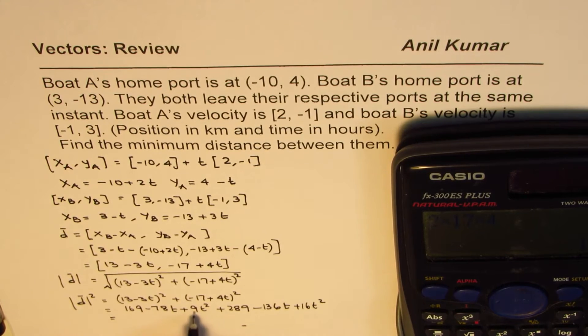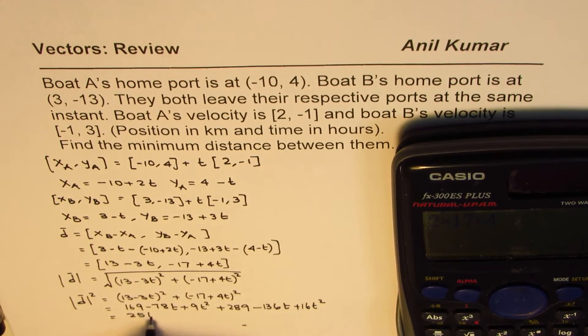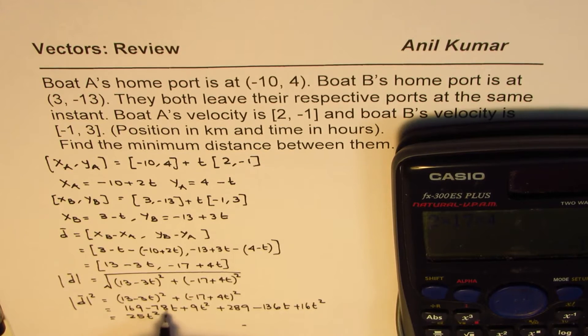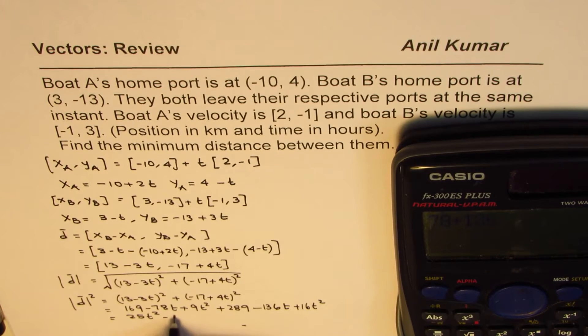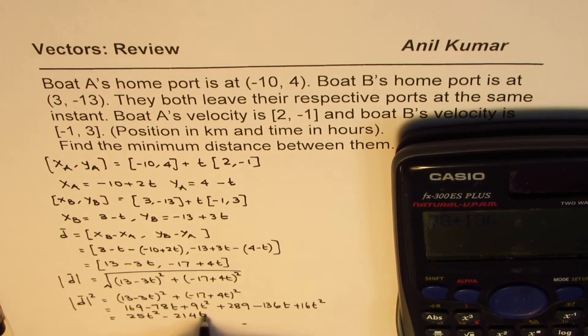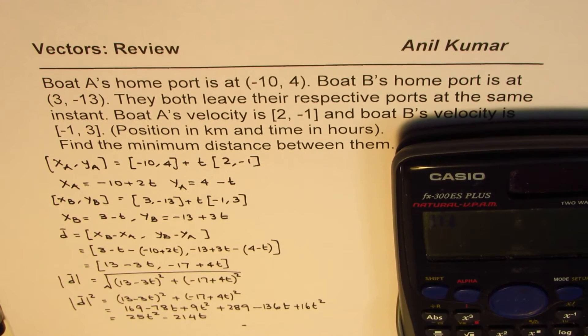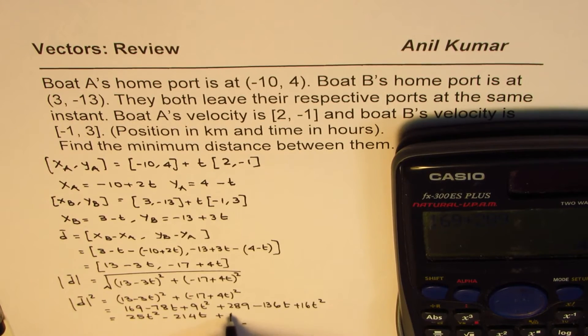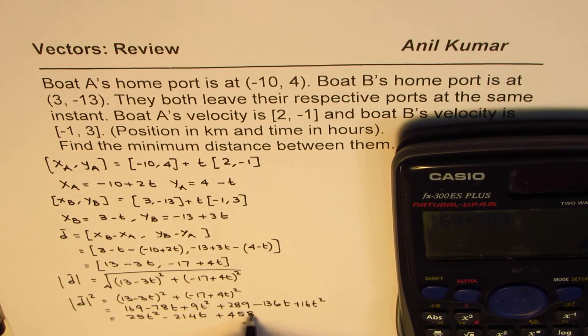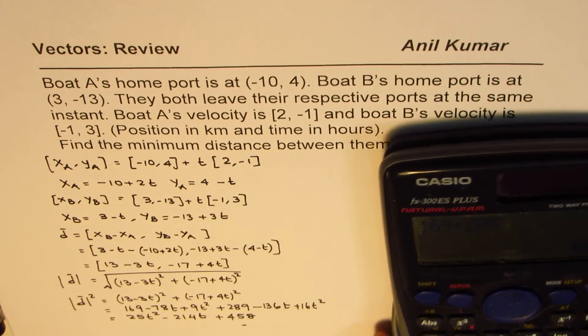Now we can combine these t² terms, which is 25t². 78 and 136, 78 + 136 gives us 214. So we have minus 214t. Constants are 169 + 289, which gives us 458. So we have plus 458. That becomes square of distance.